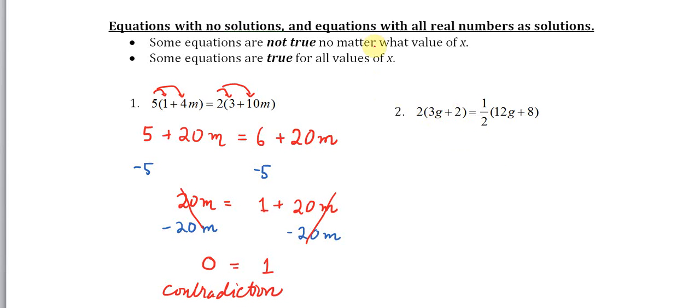Let's solve the second problem, which will hopefully clarify things. Two times 3g is 6g, two times two is positive four. On the other side, one-half times 12g is 6g, and one-half times eight equals positive four.